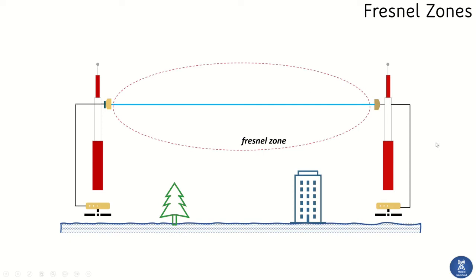Next, we move on to the Fresnel zone. We learned that a direct line of sight between site A and site B allows a microwave link to be established. However, around the microwave beam there are multiple zones in practice, and all obstructions should be kept clear of these zones — at least within the first Fresnel zone.